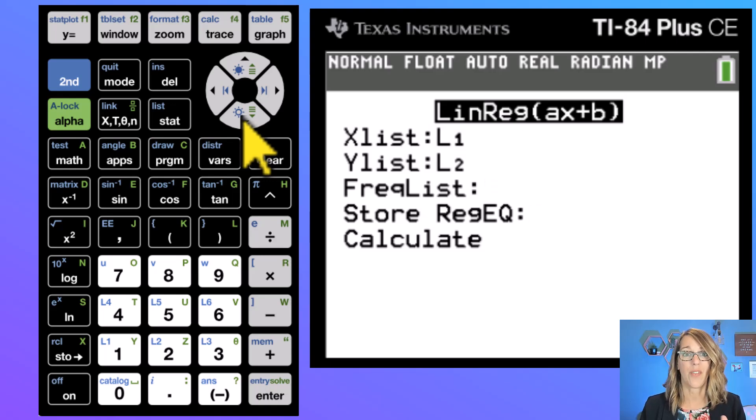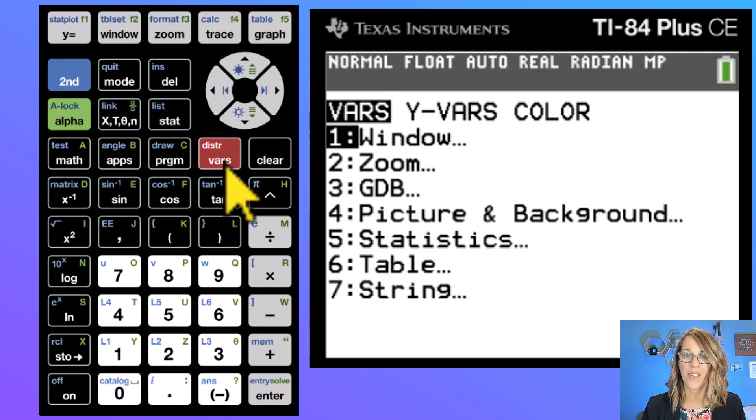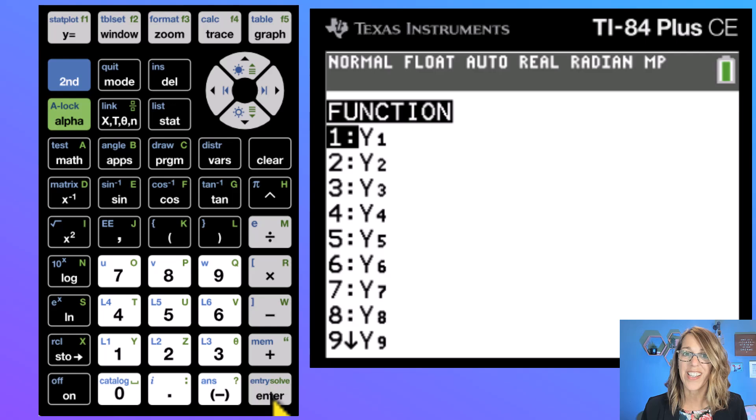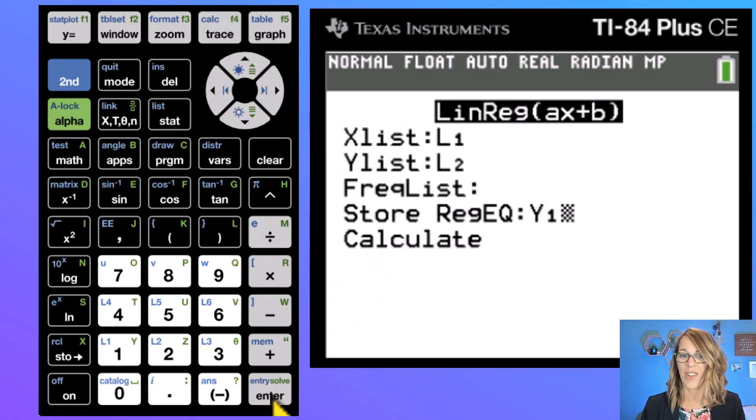I do want to store my regression equation and I'm going to store that in y1 so I can also graph it. I want to go to my vars key which is right over here. We want y variables so I arrow over to the y variables. One function, that's chosen, exactly what I want. I hit enter here and I do want y1, so I just hit enter again. So I've got y1 for that regression equation.